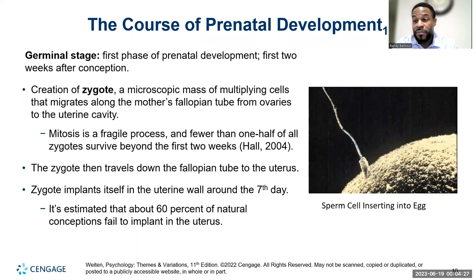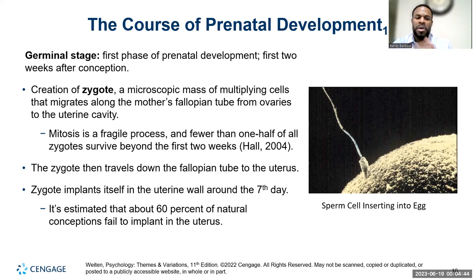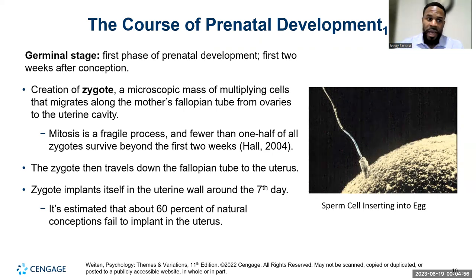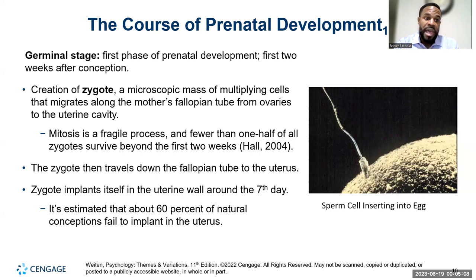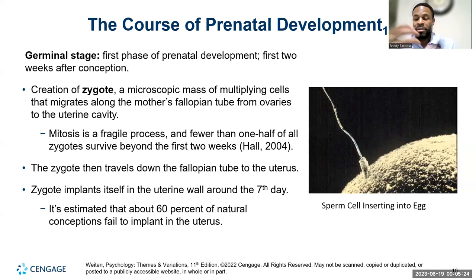When we talk about the first phase, the germinal stage, this begins at conception — when the sperm inserts itself into the egg and the DNA from the mom and the dad combine. This is where you determine your sex, your hair color, your eye color. With this stage, this becomes the creation of a zygote, which is a microscopic mass. The zygote then begins to multiply almost instantly and migrates along the mother's fallopian tube from the ovaries to the uterine cavity, where the zygote then inserts itself and becomes a blastocyst — that collection of cells.